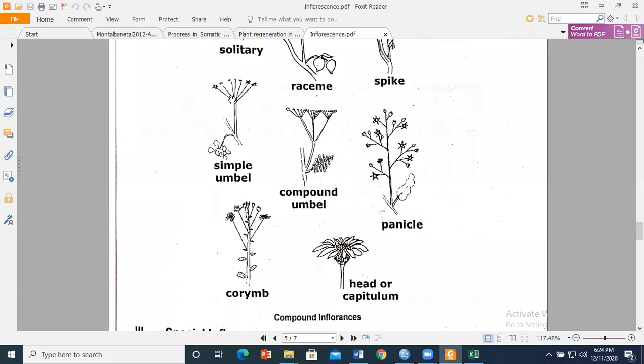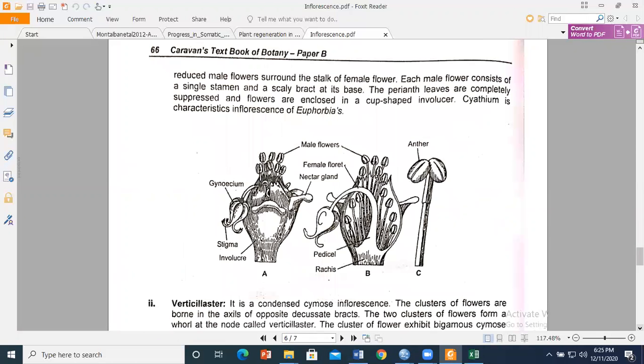You can see this is a simple umbel and this is the main axis. This is compound umbel. This is corymb. The lateral branches spread at different levels. This is capitulum or head, like in sunflower. It is a capitulum with ray and disc florets.